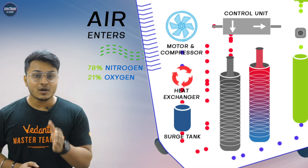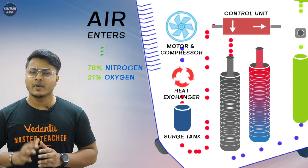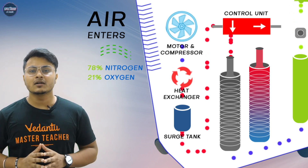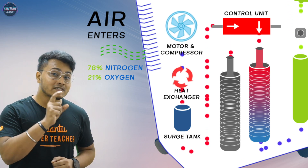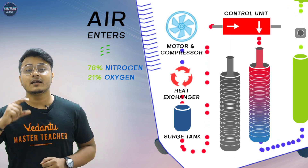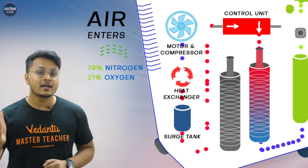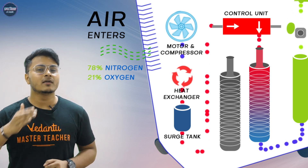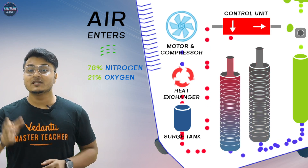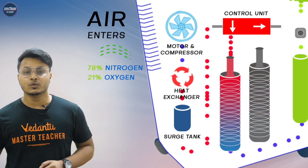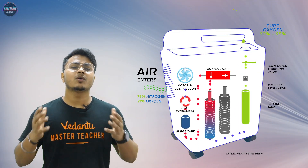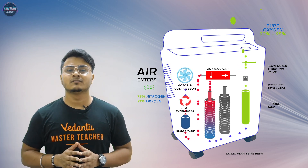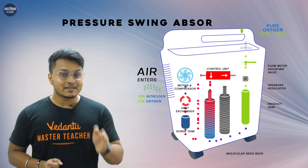Isliye in concentrators mein do zeolite cylinders hote hain, and it is controlled by a control unit. When cylinder 1 fills up, the control unit turns the flow off from cylinder 1 and turns on cylinder 2 automatically, during which cylinder 1 releases the accumulated nitrogen. The same thing then happens with cylinder 2, and the cycle continues — and that is how an oxygen concentrator saves millions of lives.